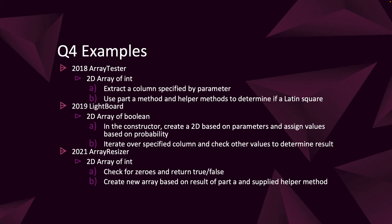In Q4 of 2021, we had the array resizer method, again working with a 2D array of int — so we've seen an int, Boolean, int pattern so far. In part A, we check each row to determine if it had zeros in it and return true or false accordingly. In part B, we create a new array based on multiple calls to part A and supplied helper methods to create a brand new resized array based on whether rows had zeros in them. Overall, we're evaluating and traversing arrays to get information, then working through how to solve those problems.